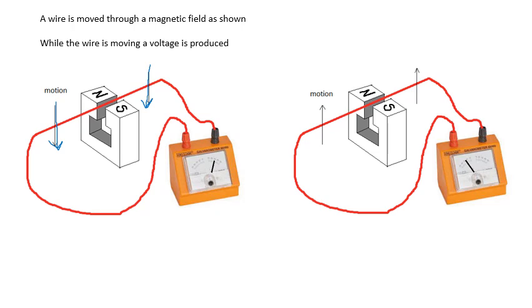If you had a circuit, then you would also get an induced current. But you don't need a circuit to get an induced EMF. So, as you move the wire through the field, you get, like, that might be positive, that might be negative. You create a voltage.